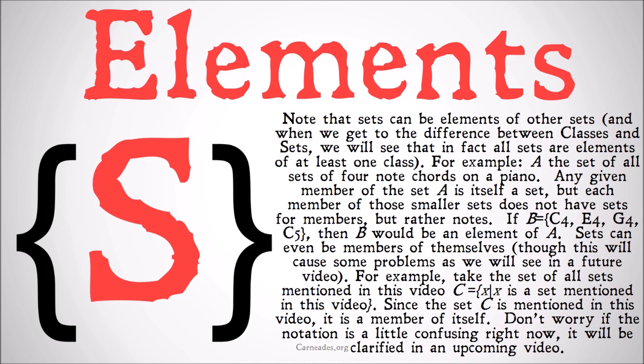For example, take the set of all sets mentioned in this video. So C is the set of all sets mentioned in this video. Since the set C is mentioned in this video, it is a member of itself. Don't worry if the notation is a little confusing right now — it's going to be clarified in an upcoming video. I just wanted to start introducing it a little bit here. So C is a set which is a member of itself, A is a set which has as its members sets, and B is a set which does not have as its members sets — it has as its members notes.